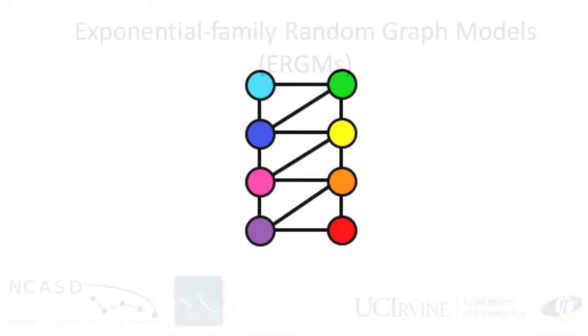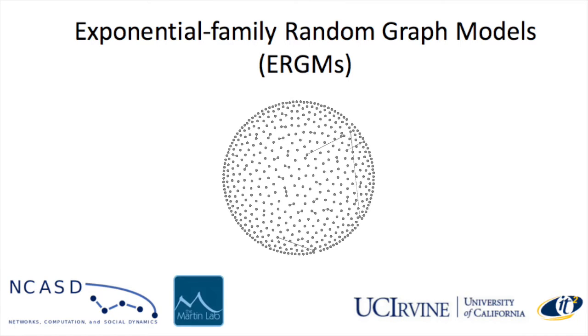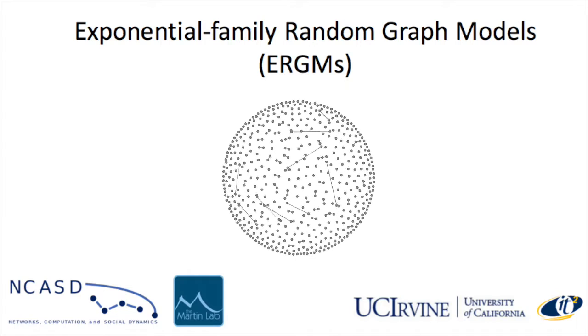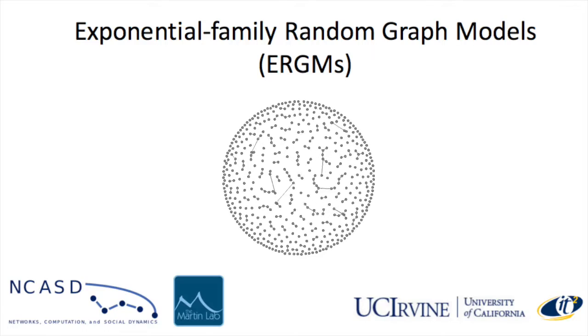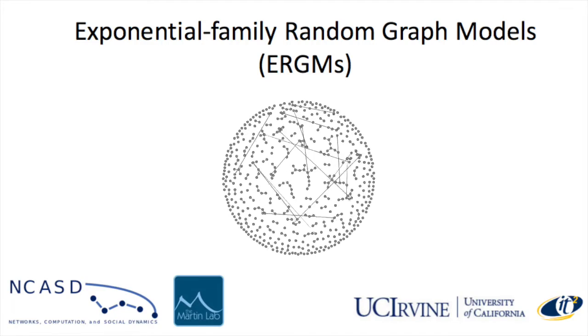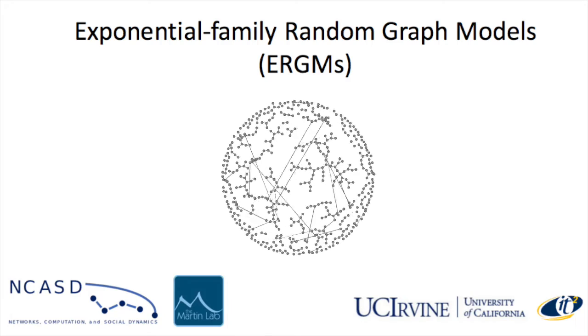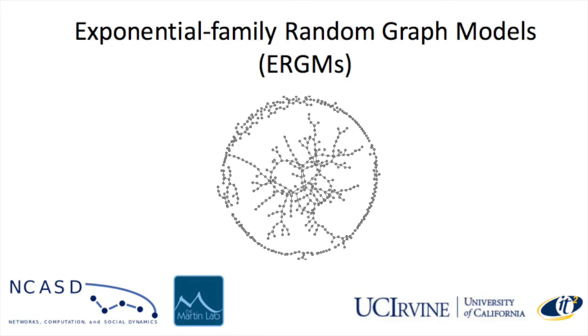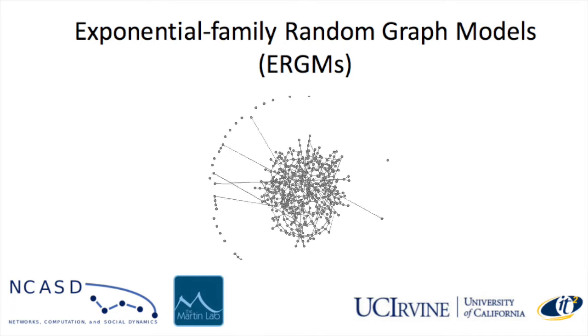But we can do more than that. Using a family of network models known as exponential family random graph models, or ERGMs, we can build simple stochastic models that recapitulate the structures we see in real fibrils. We can also use dynamic extensions of ERGMs to study fibrilization kinetics. By focusing on how the fibril topology forms, we can gain insights into the aggregation process in an extremely computationally efficient way.